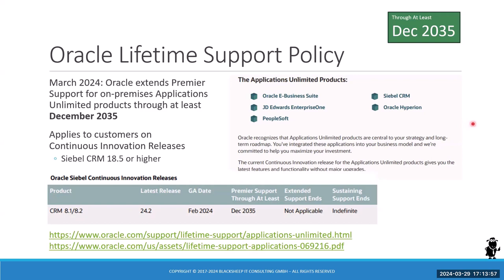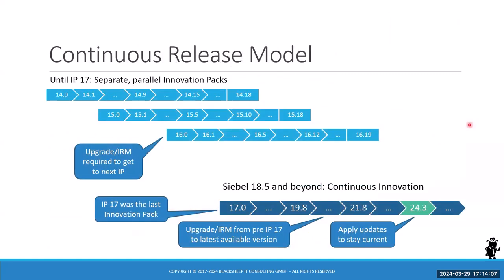The announcement is all over social networks and LinkedIn, and now on the Siebel Hub as well. If you're on IP 14, 15, 16, or IP 17, you're not getting that extension because you're not on a continuous innovation release. Starting with 18.x and going up to the latest, you're on a continuous innovation release.